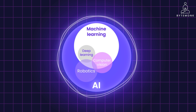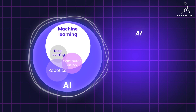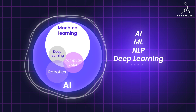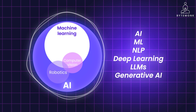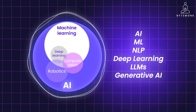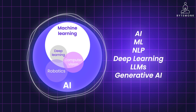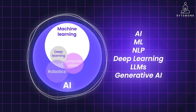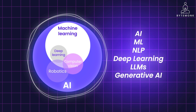The field of AI is constantly evolving, and boundaries between these areas can sometimes blur with new advancements. However, understanding the core relationship between AI, ML, NLP, Deep Learning, LLMs, and Generative AI provides a solid foundation for exploring the exciting world of language processing and its connection to the broader field of AI.